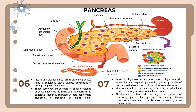When blood glucose concentration rises too high, beta cells sense this and respond by secreting greater quantities of insulin into the blood. Insulin in turn has several effects. First, muscle and adipose tissue cells, or fat cells, are stimulated to absorb more glucose from the bloodstream. Simultaneously, liver cells undergo the process of converting glucose into glycogen for storage, and these combined actions lead to a decrease in the blood glucose concentration.